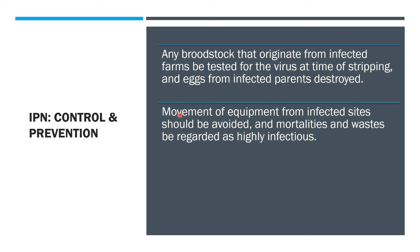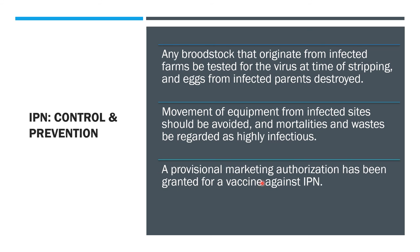The IPN virus can be inactivated by disinfectants such as chlorine, formalin, iodine, ozone, and a high pH of 12. A provisional marketing authorization has been granted for a vaccine against IPN.